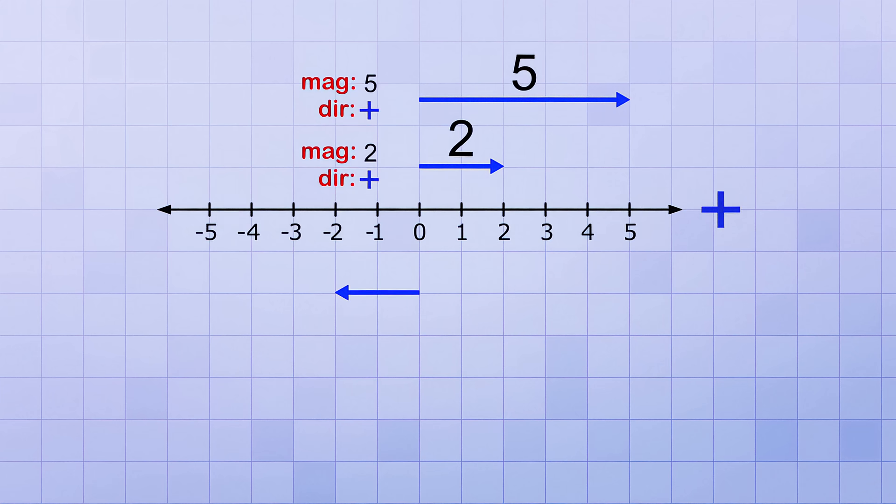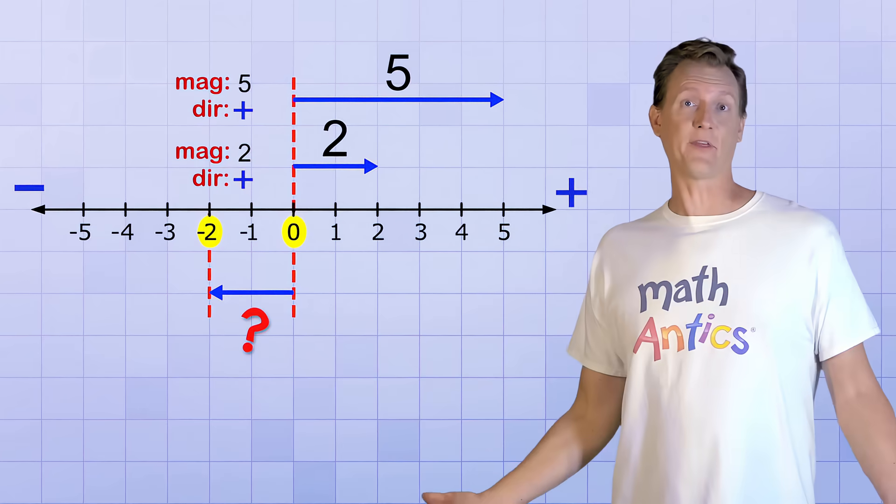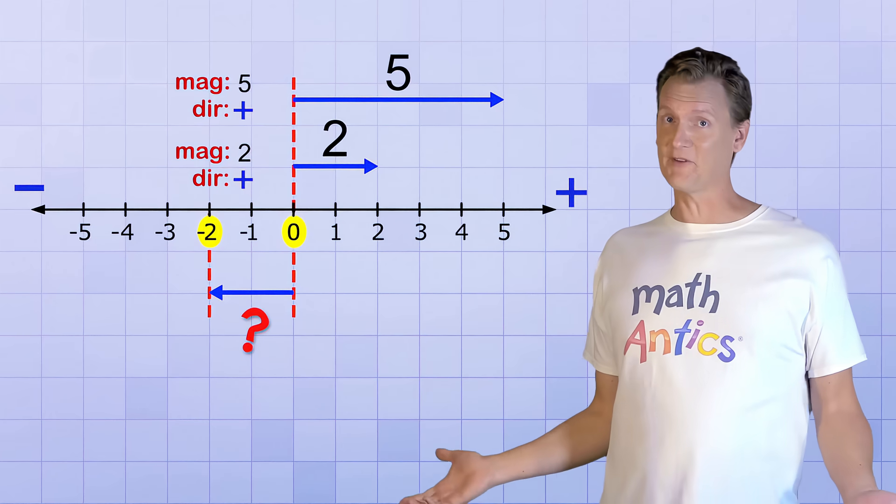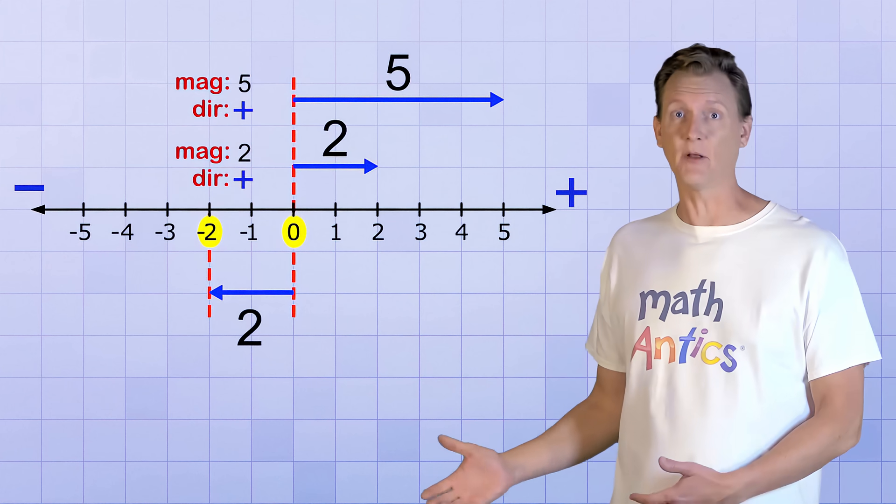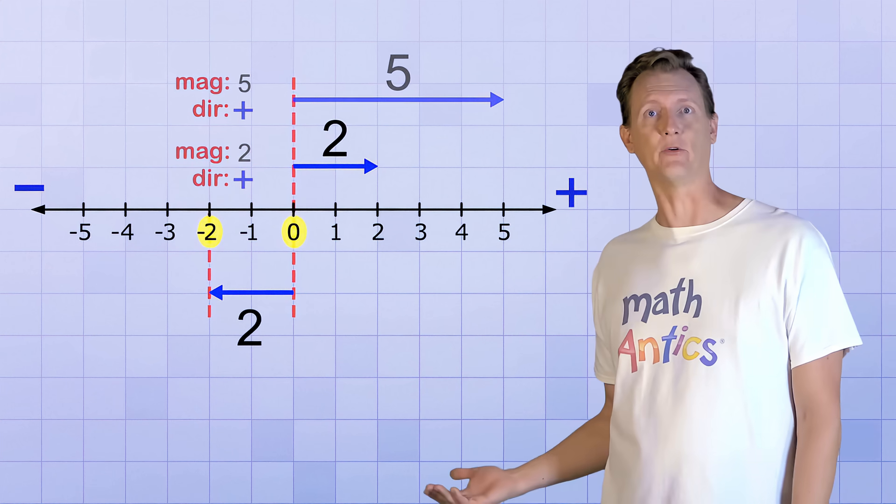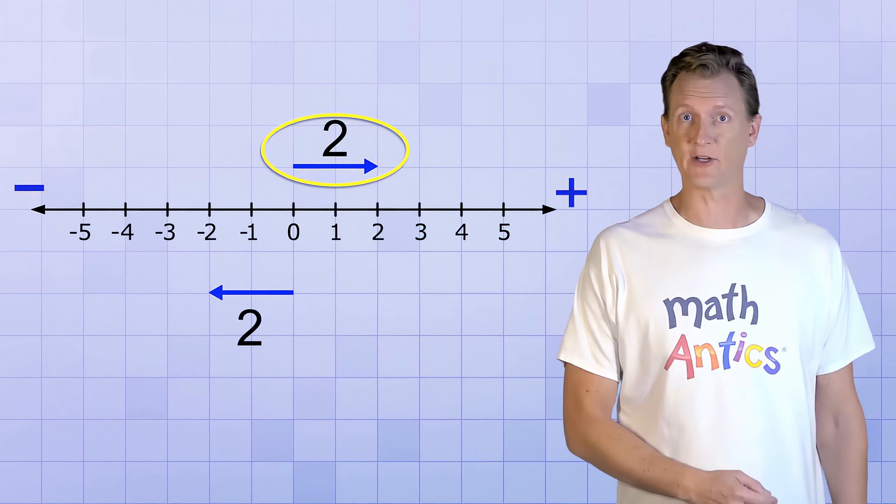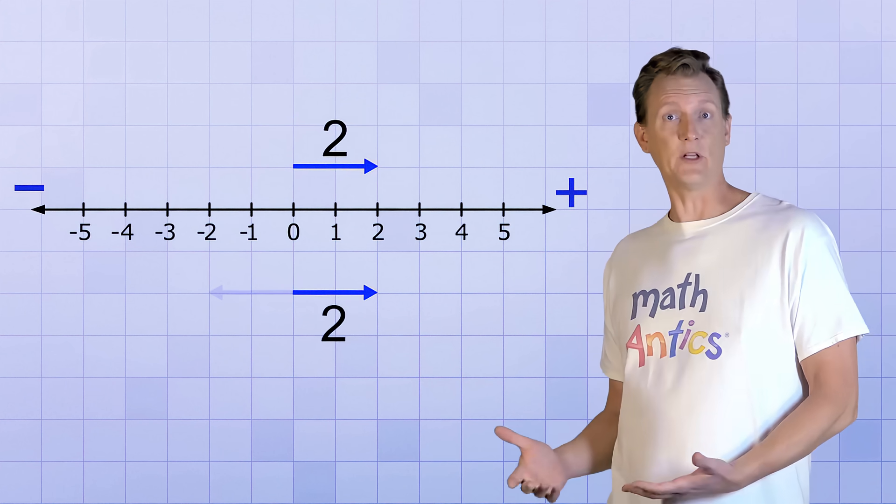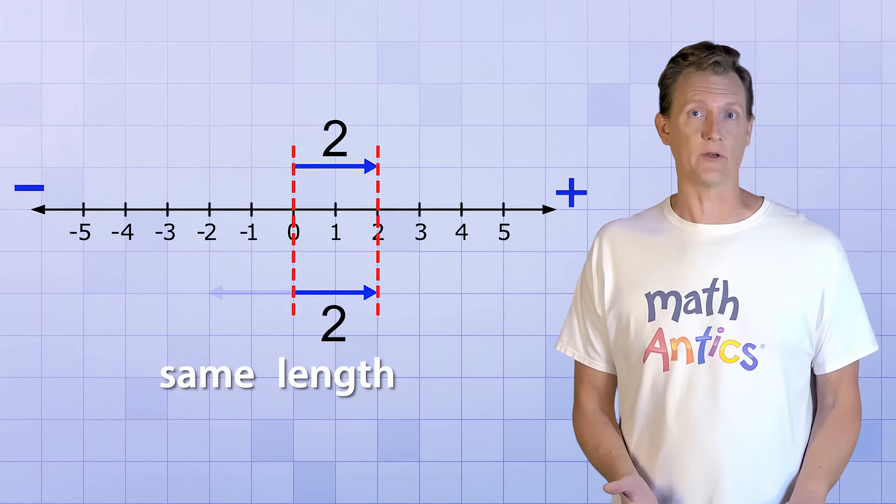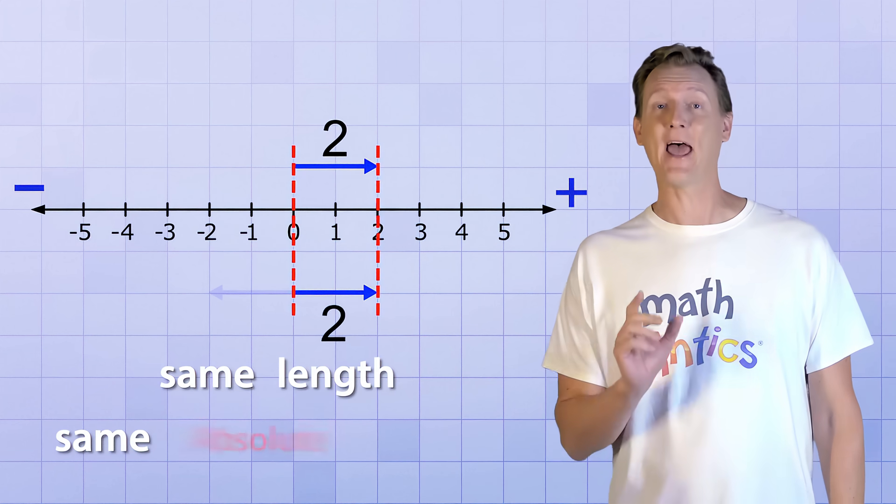But what about this vector here? It starts at 0, like our other vectors do, but it ends at negative 2. And the arrow indicates that it's pointing in the exact opposite direction from the other two vectors. It's pointing to the left, or in the negative direction of the number line. So what do you think its magnitude is? For those of you that said 2, you're right. Even though the vector is pointing in the negative direction, its length is still a positive number. Its length is 2, just like this vector that's pointing in the positive direction. They're pointing in opposite directions. But if you rotate one vector around, you can see that they really do have the same length or magnitude. And another way to say that is that they have the same absolute value.